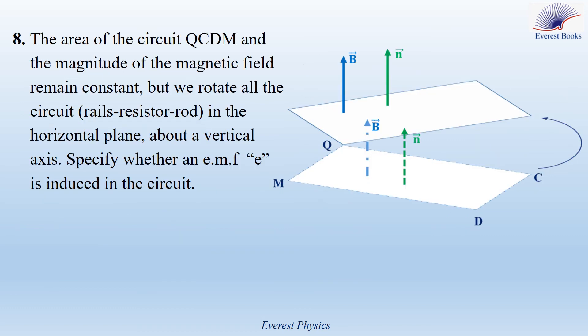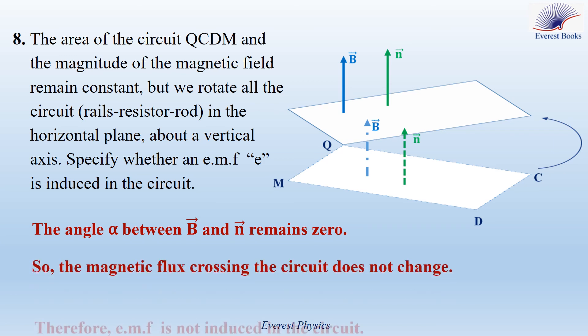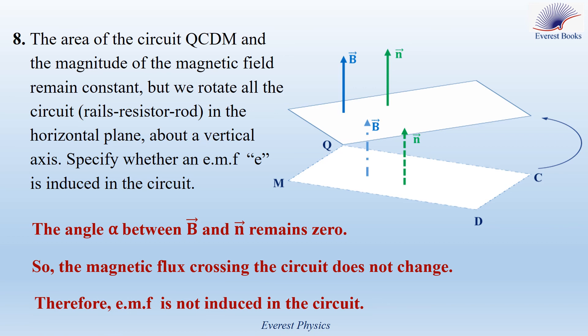Part 8: the area of circuit QCDM and the magnitude of B remain constant, but the entire circuit (rails, resistor, and rod) is rotated in the horizontal plane about a vertical axis. Determine whether an EMF is induced. During rotation, the unit vector N remains vertically upward, so the angle α between B and N remains zero. Since α, B, and the area all remain constant, the magnetic flux does not change. Therefore, no EMF is induced in the circuit.